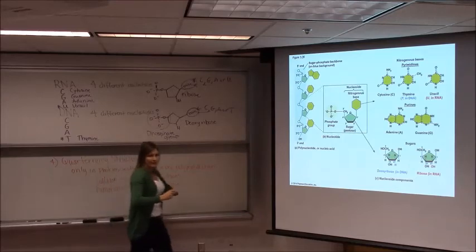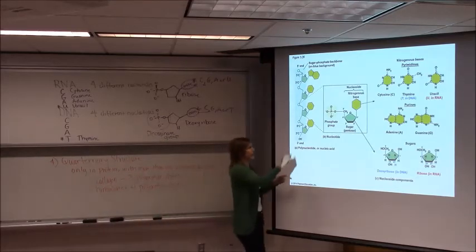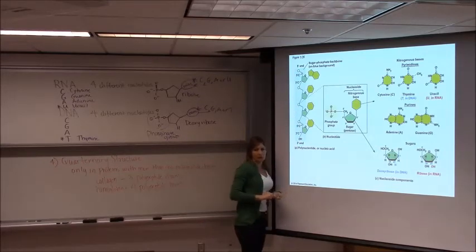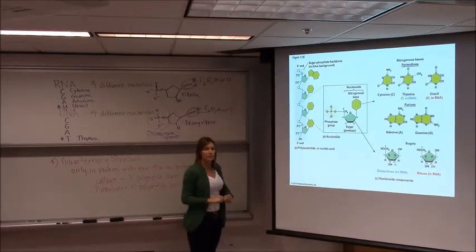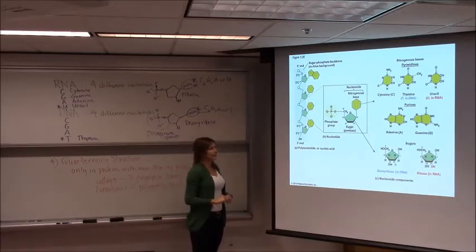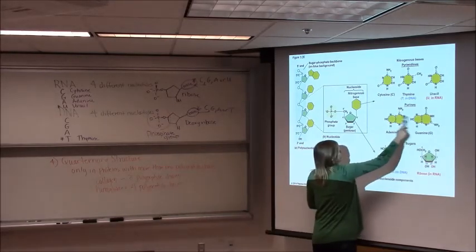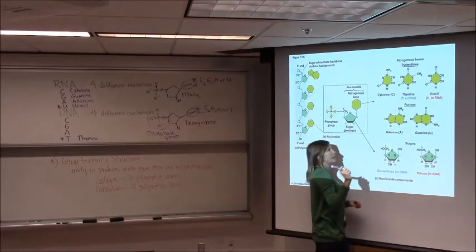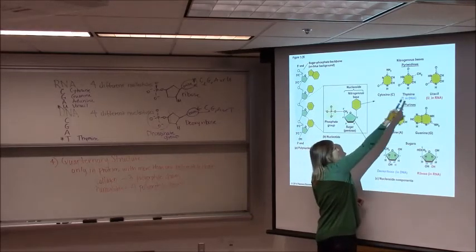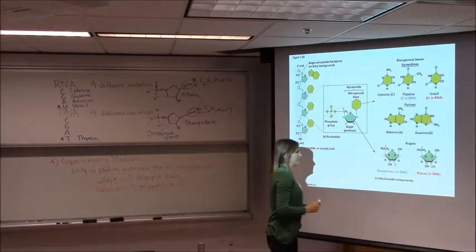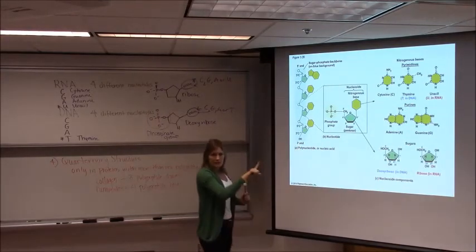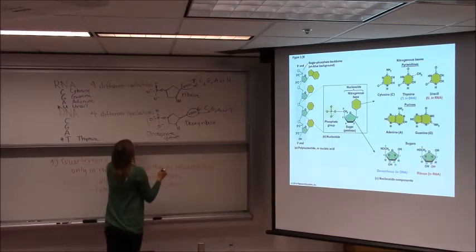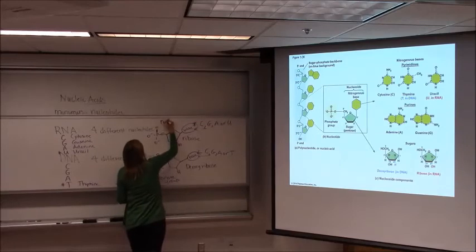Then what happens is those nucleotides link together in any possible arrangement to produce that polynucleotide. You don't need to memorize the structure of these different bases. You do need to know that they share three, but this is where they differ. And ribose and deoxyribose are the two pentose sugars that make up that nucleotide. These are the nucleotides.